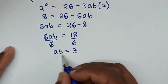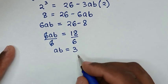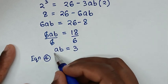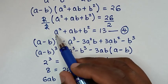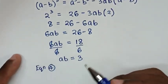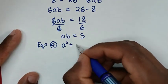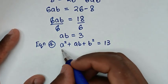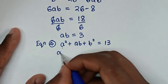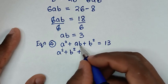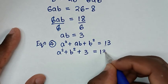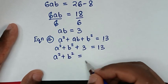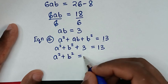Now that we have ab = 3, we recall equation 4: a² + ab + b² = 13. Substituting ab = 3: a² + b² + 3 = 13, so a² + b² = 13 - 3 = 10.